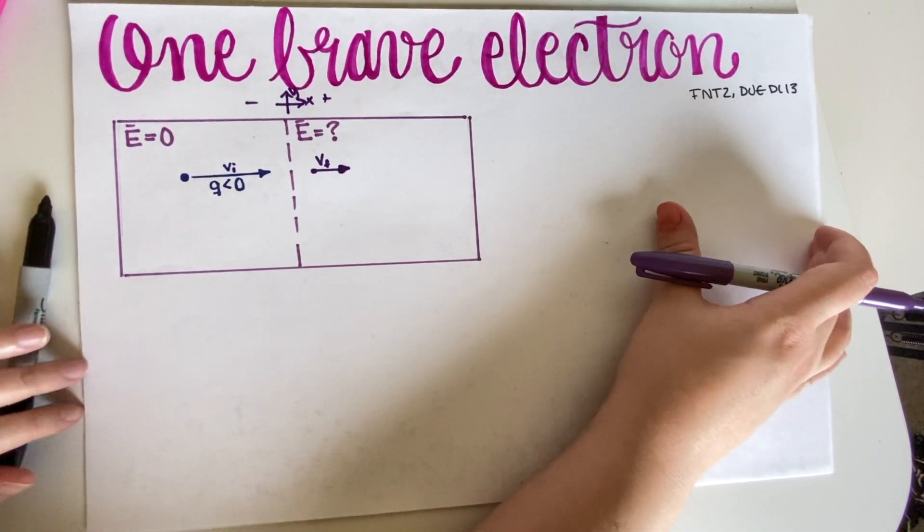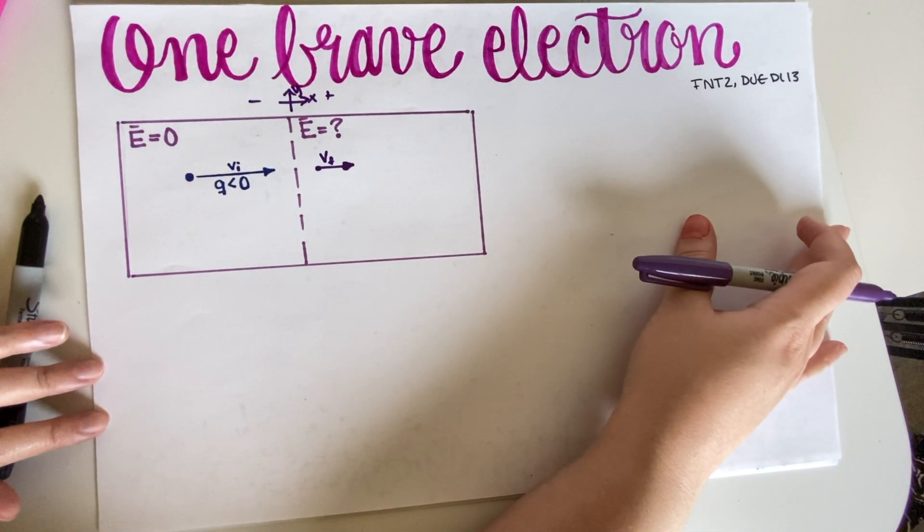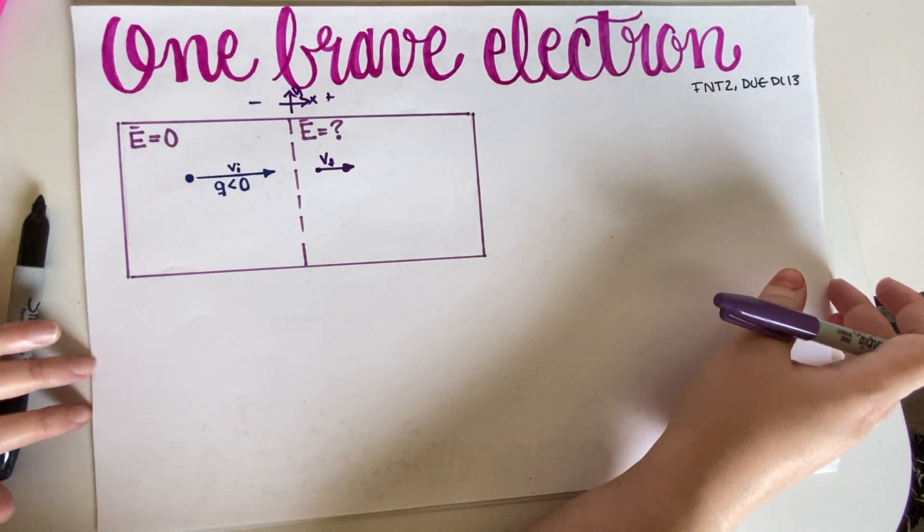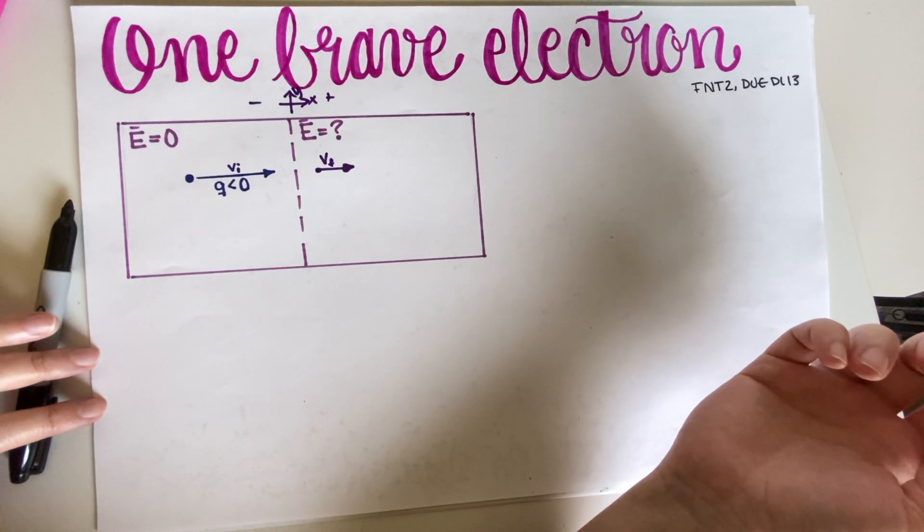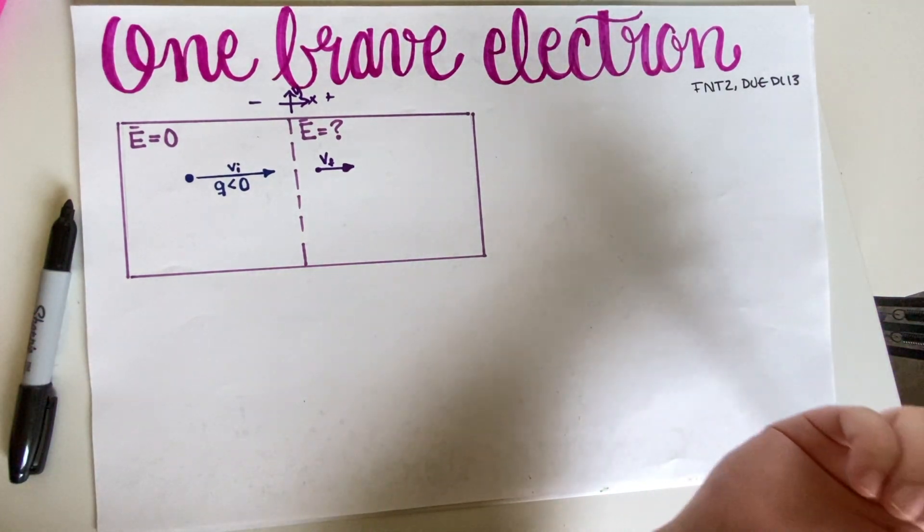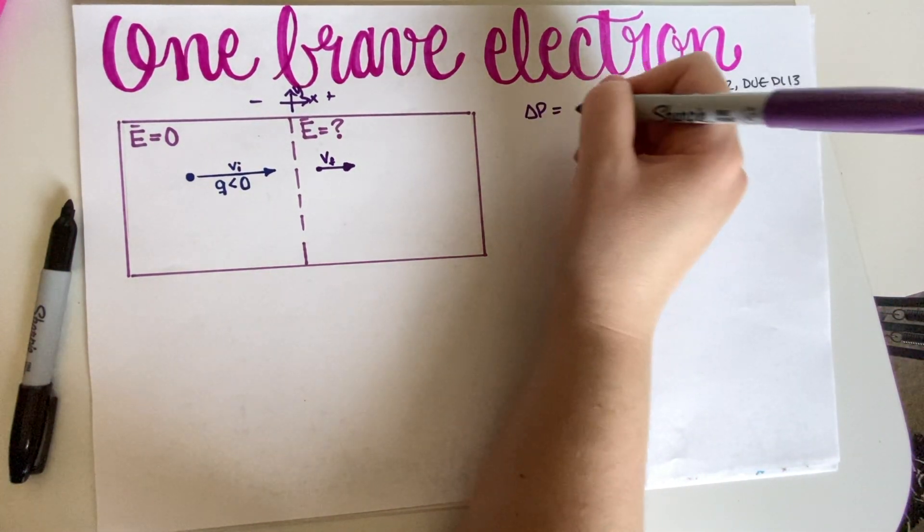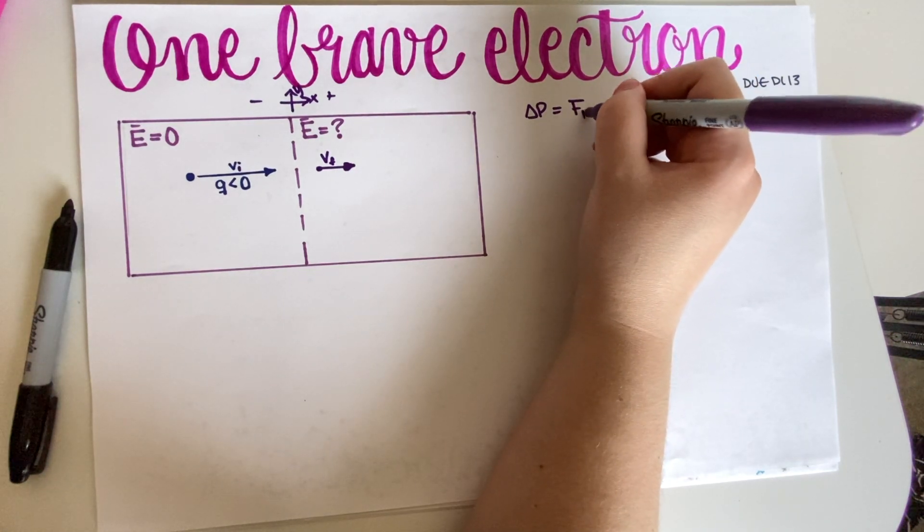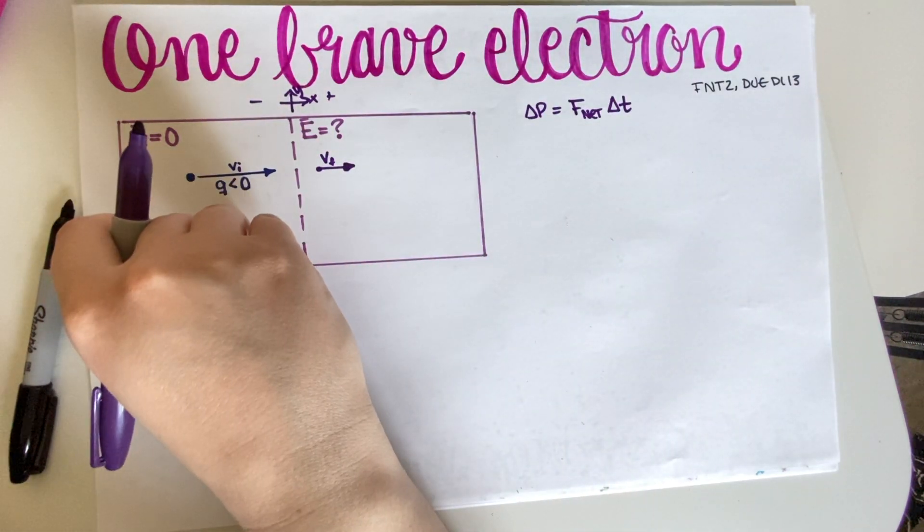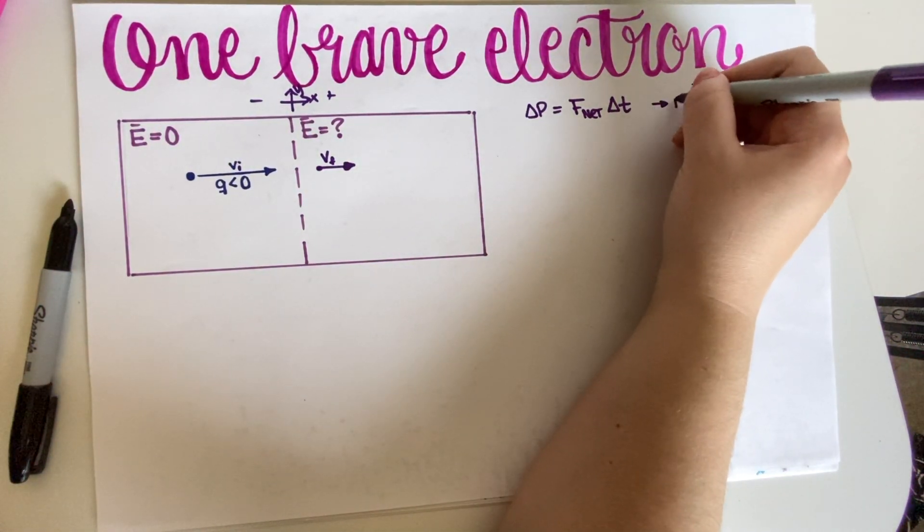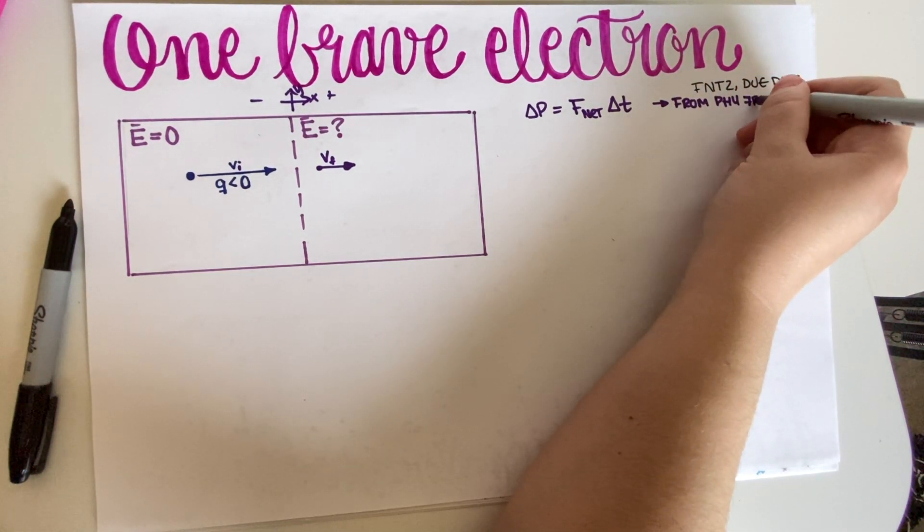Now, the first relationship that we need to figure out, the first thing that it would be good to remember from physics 7b, is how am I going to solve the problem? There are a lot of ways in which you can solve this problem, but I'm just going to go ahead and quote 7b. Delta P is equal to net force times delta T.